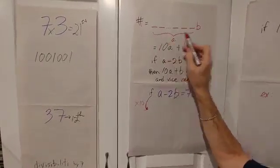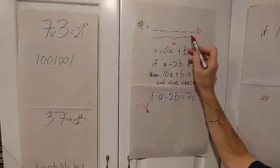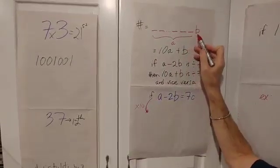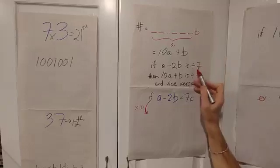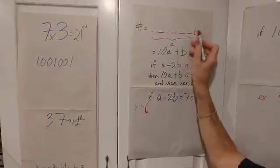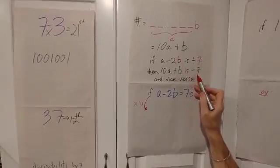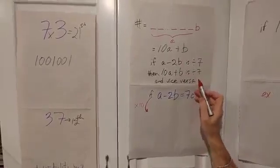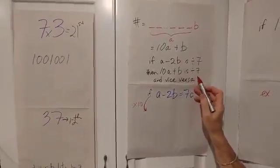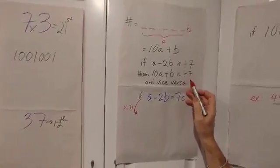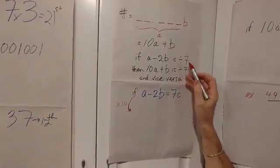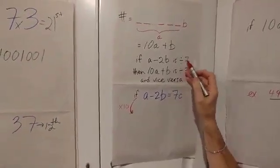So if you take this number, whatever it is, and subtract two times this number, if you can divide that evenly by seven, then that entire number, which is 10A plus B, will be divisible by seven. Now that's a very random rule. I find it hard to believe that. So let's see if it's true. Let's see if we can prove that if this is true, this is true, and if this is true, this is true. We'll do it both ways.